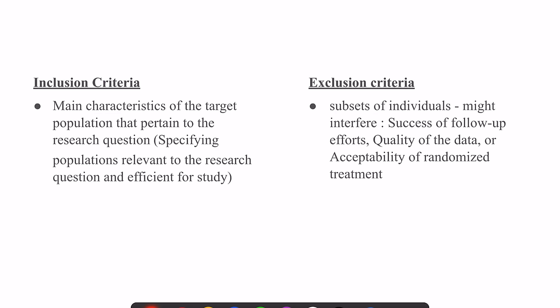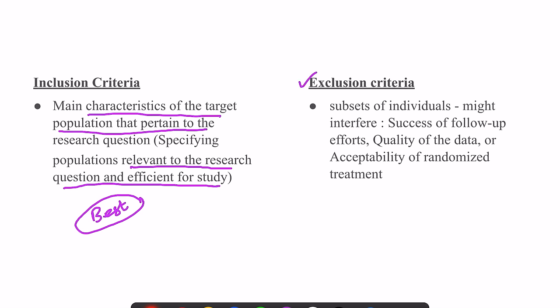The difference between inclusion and exclusion criteria: inclusion criteria represents the main characteristics of the target population that pertain to the research question — specifying the population relevant to and efficient for the study. Exclusion criteria covers the subset of individuals that might interfere with follow-up efforts, quality of data, acceptability of the randomized treatment, or any other bias-inducing characteristics that will be excluded from the study.